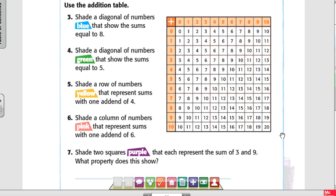It says shade a diagonal of numbers blue that shows the sums that equal eight. So all the numbers that you add together equal eight. What am I going to be coloring? All eights.